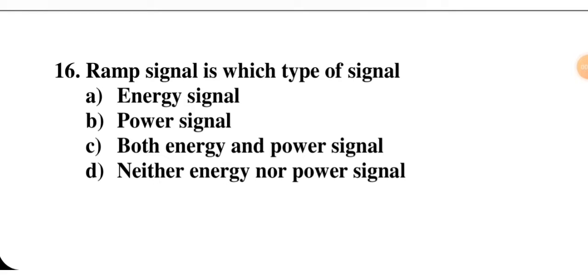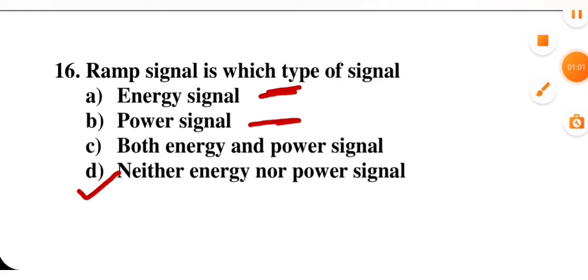Next question: a ramp signal is which type of signal — energy signal, power signal, both, or neither? The right option is D. An energy signal must be aperiodic; a power signal must be periodic. The ramp signal has amplitude that continuously increases to infinity, so it is neither a power signal nor an energy signal.